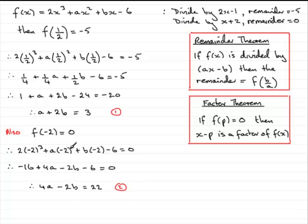Now, it's up to you how you solve these simultaneous equations, but because I've got a plus 2b here and a minus 2b here, I'm going to add the two equations. I'm going to say that 1 plus 2 gives, we have a plus 4a, which is 5a, and then 2b added to minus 2b gives 0. And then we have 3 plus the 22 is 25. So 5a equals 25, and if I divide both sides by 5, I end up with a equaling 25 divided by 5, which is 5.